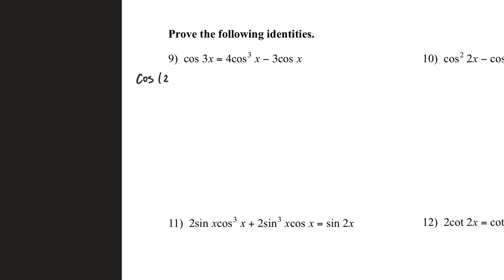So when we rewrite this, it's going to be cosine of 2x plus x. We're going to be using the sum of different identities to do this.